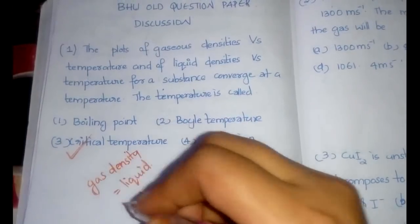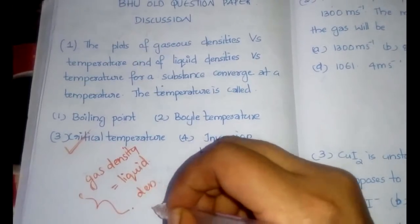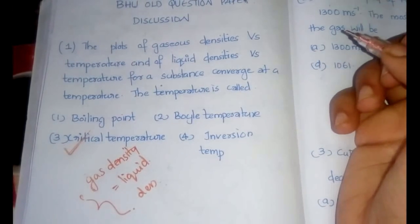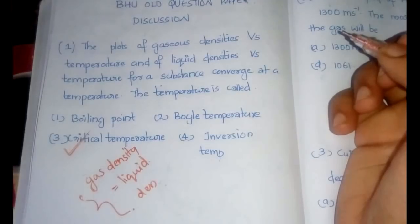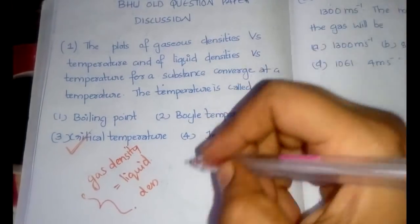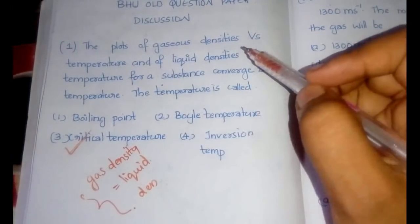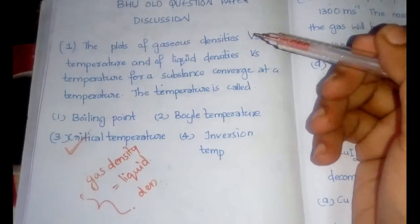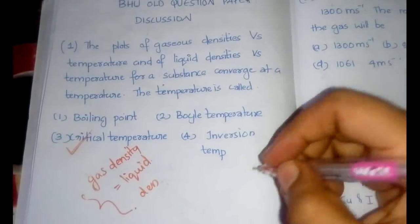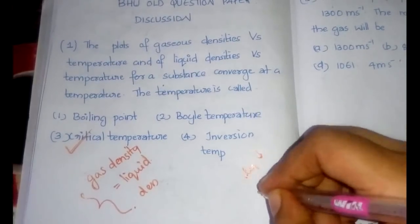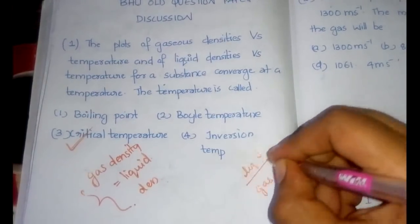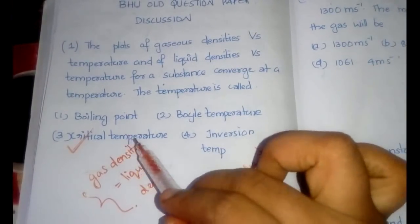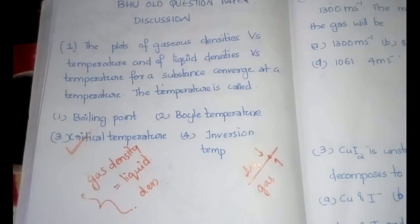As the temperature is increased, the liquid gets heated and transforms to gas. As a result, the density of the gas increases and the density of the liquid decreases. When liquid density decreases and gas density increases, at a certain temperature these become equal — that temperature is the critical temperature.